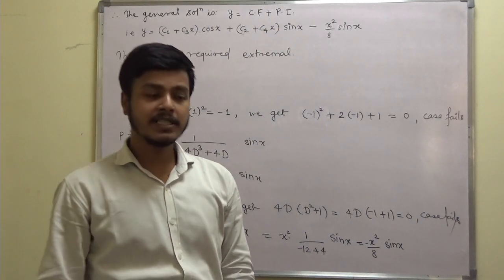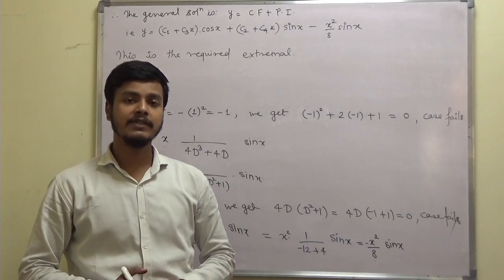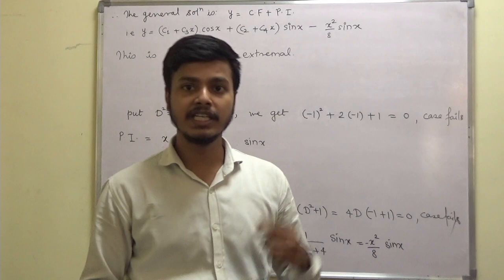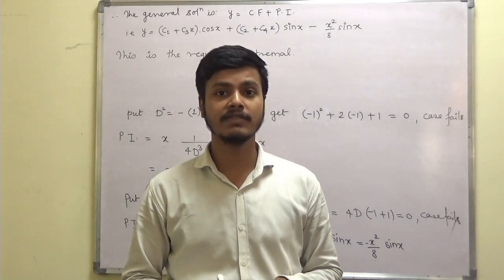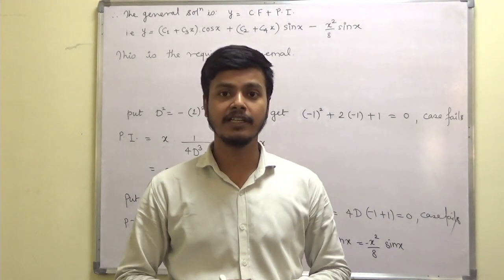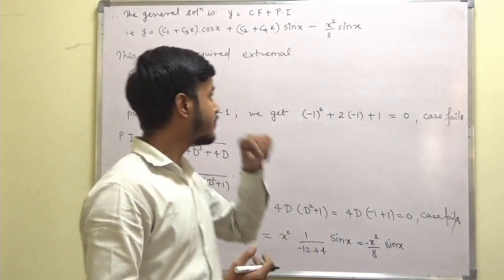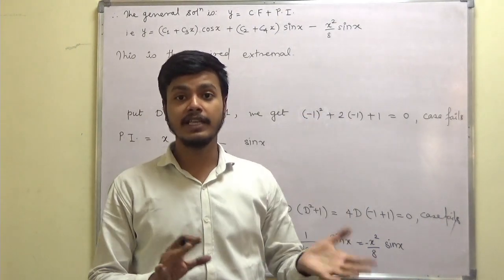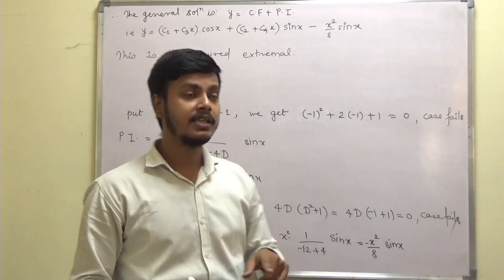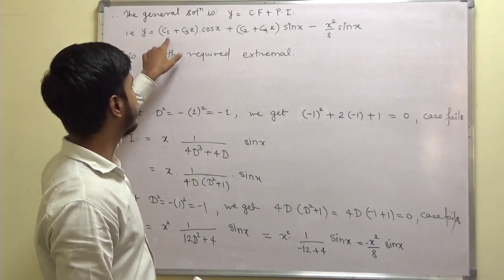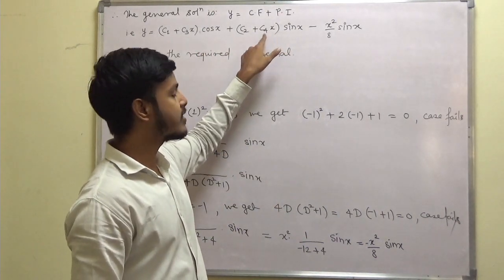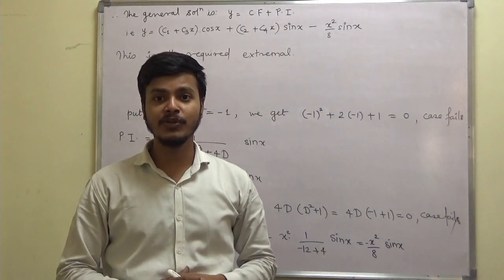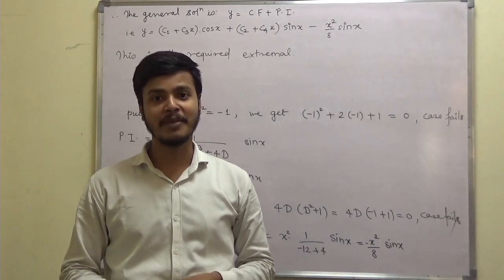I hope this is making sense. In the first example we only needed the complementary function; here we needed both CF and particular integral. In the next learning video we'll take a problem where we find both CF and PI plus some boundary conditions to determine the arbitrary constants. Thank you for watching and enjoy learning mathematics.